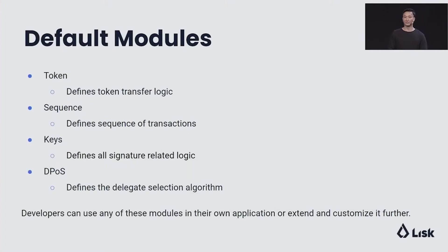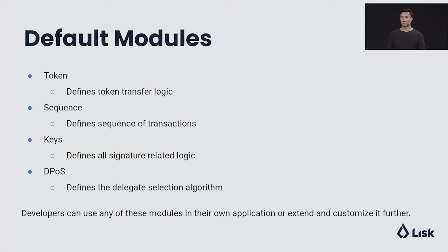The Lisk SDK comes with a set of default modules. First, we have the token module, which defines the token transfer logic — for example, if Bob wants to send 10 Lisk to Alice, all that logic will flow through this module. Next up, we have the sequence module, which defines all sequences of transactions to ensure they are processed in the correct order. Then we have the keys module, which defines all signature-related logic, so the validation and verification of signatures happens here. And finally, we have the DPOS module, which defines the delegate selection algorithm. Developers can use any of these modules to their liking and can even customize and extend them in their own custom application.